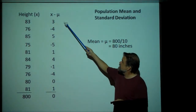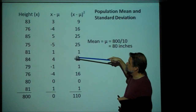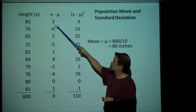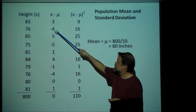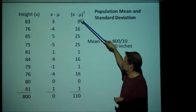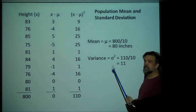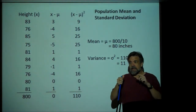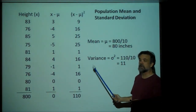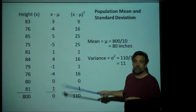So, just taking the distances and summing them up doesn't work. What I can do instead is take these distances and square them — that way, they're always positive. Here are all the squared differences: our mean is 80, so 83 minus 80 gives us 3, the square of that is 9; 76 minus 80 is negative 4, the square of that is 16; 85 minus 80 is 5, the square of that is 25, and so on. You add all those up, get 110, divide by 10, and get 11. This is the average squared difference between each data point and the mean — and that is what the variance is.